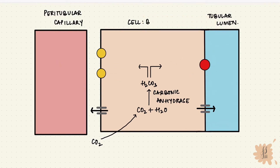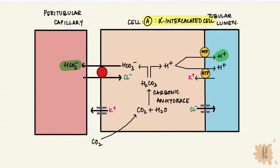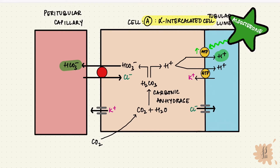The type B beta cells do the opposite, so the transporters are on the opposite side. They reabsorb hydrogen ions and eliminate bicarb, so they're important in managing alkalosis. Aldosterone has a receptor on the alpha intercalated cells as well, so it increases the hydrogen ATPase activity, increasing hydrogen secretion, and that increases bicarb-chloride exchange.